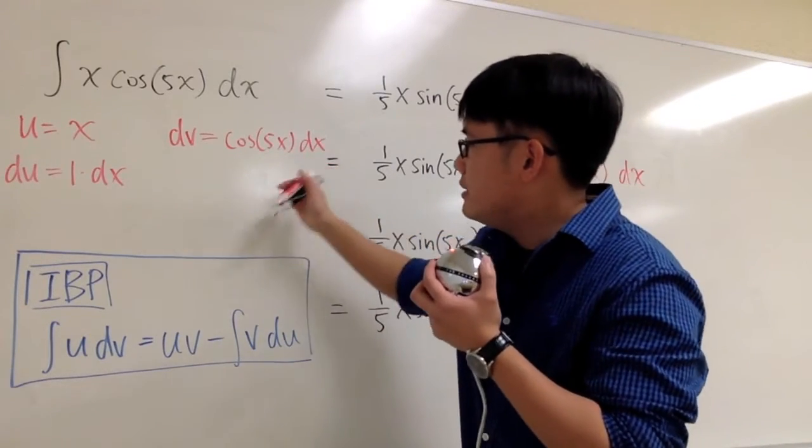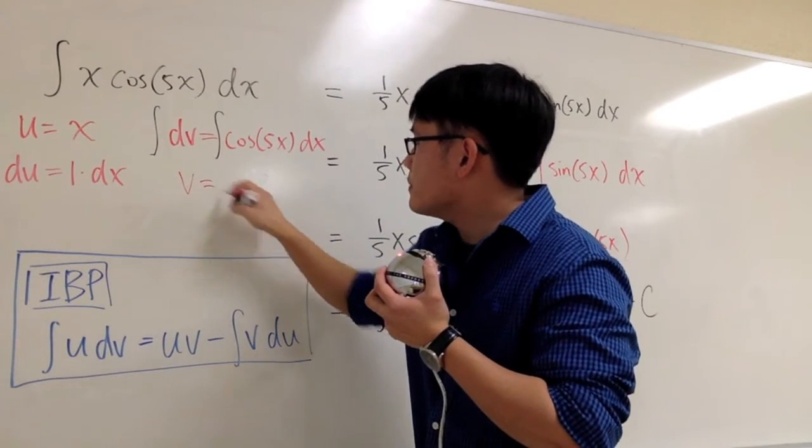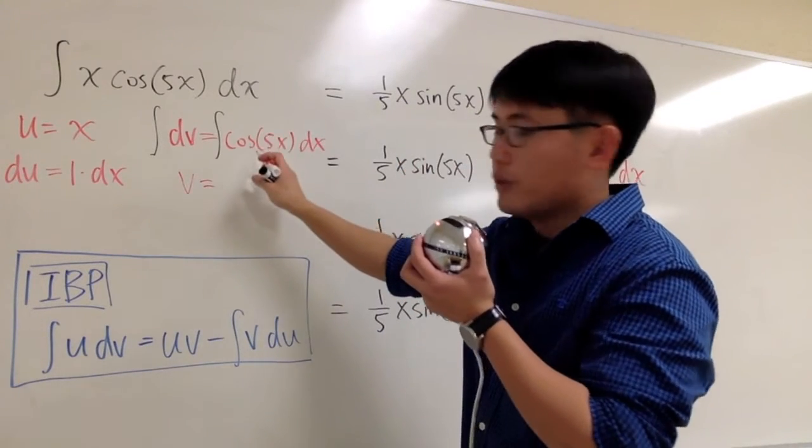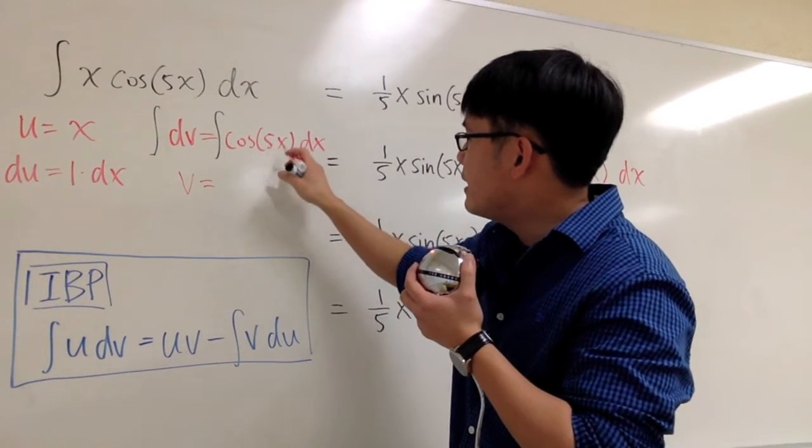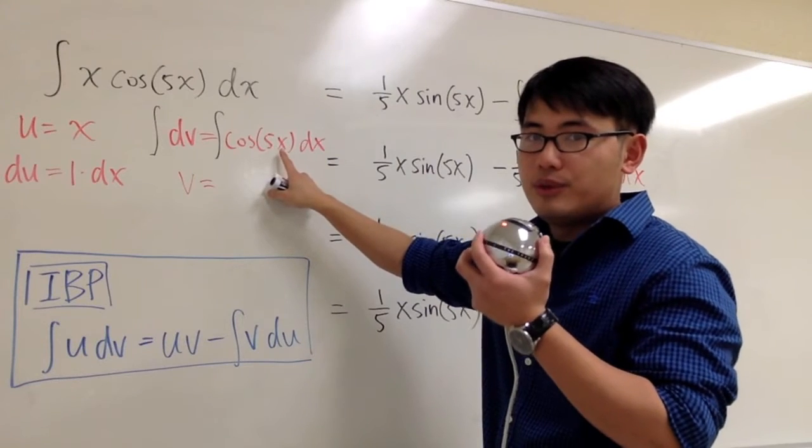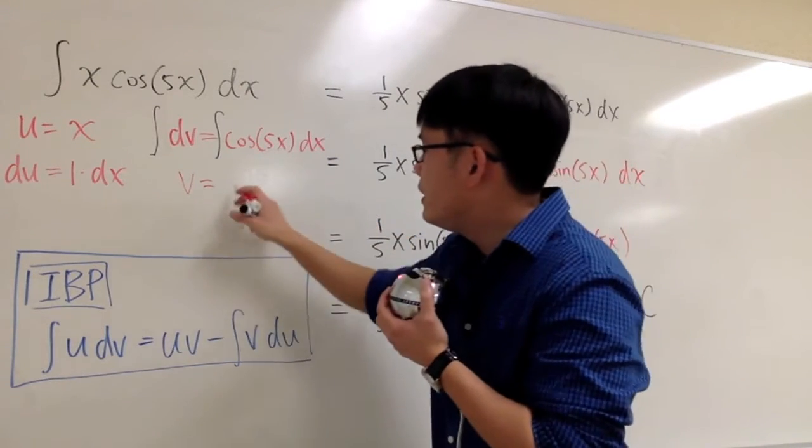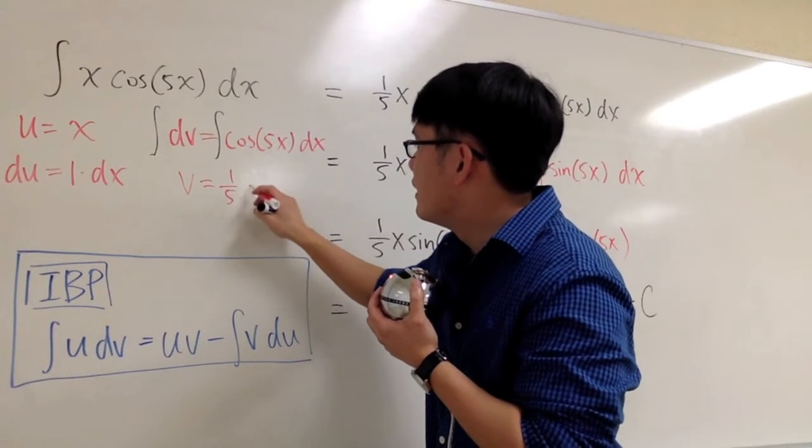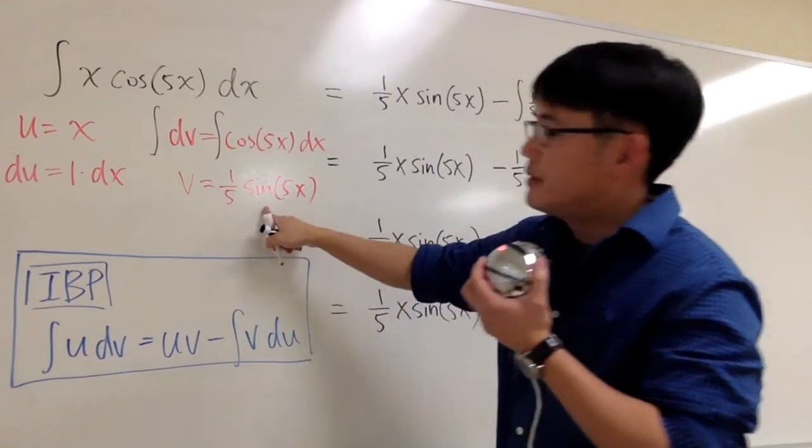And this is also pretty easy to do. Let's integrate both sides. We can get v. And the integral of cosine is going to be sine. But then, because the inside is 5x, we have to look at the derivative of 5x, which is 5. We have to divide it by 5. v will be 1/5 sine, and we keep the inside the same.